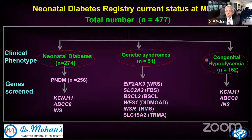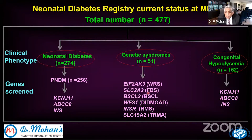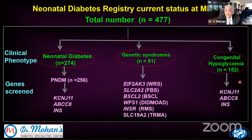Our current series now has 477 patients: 274 with neonatal diabetes, 51 with various genetic syndromes including thiamine-responsive megaloblastic anemia, Didmoad, and Wolfram syndrome — 51 different syndrome cases picked up so far.